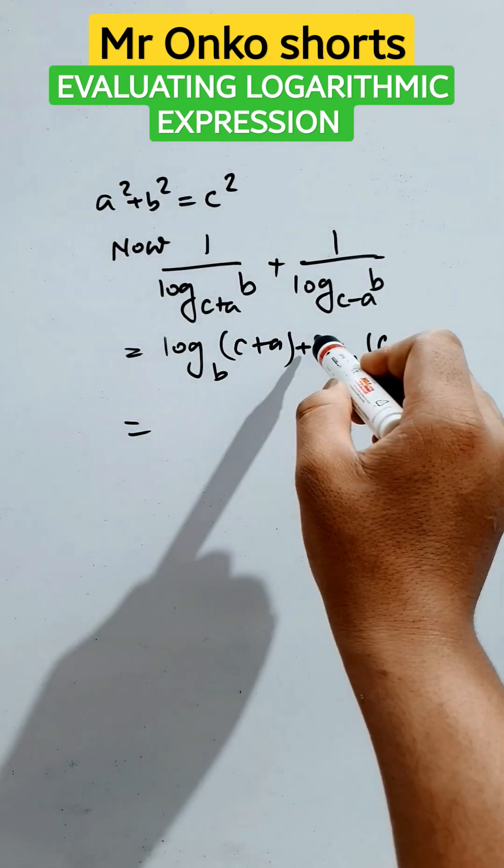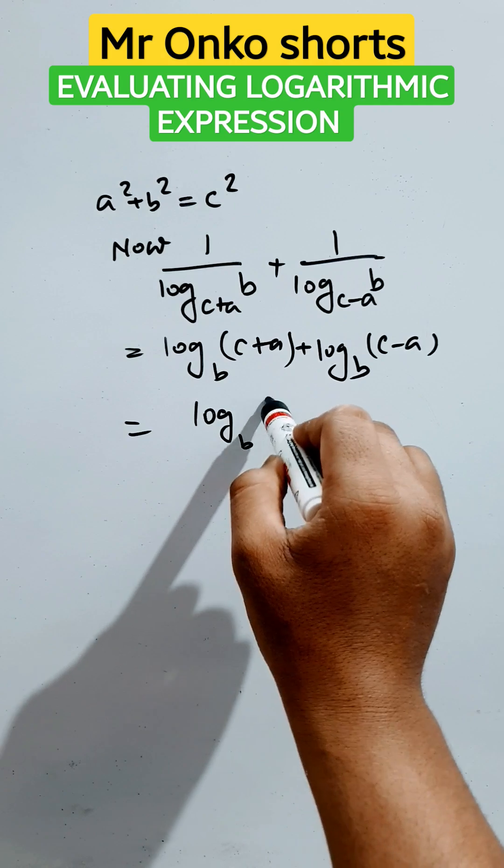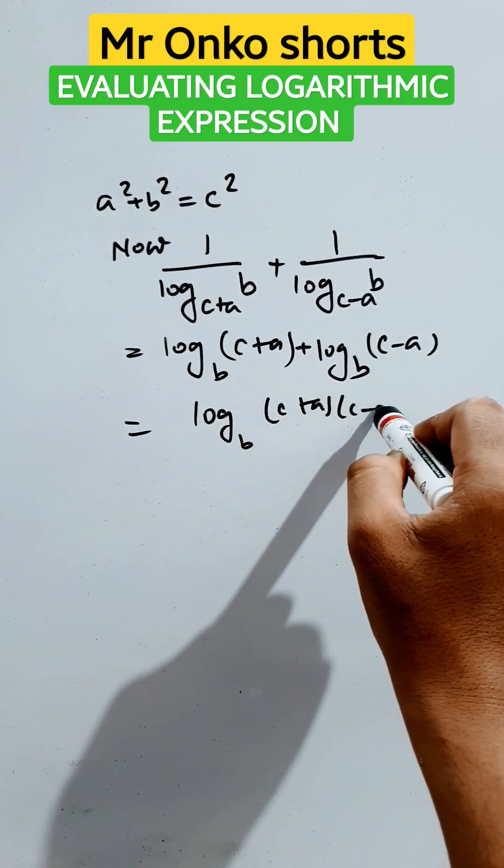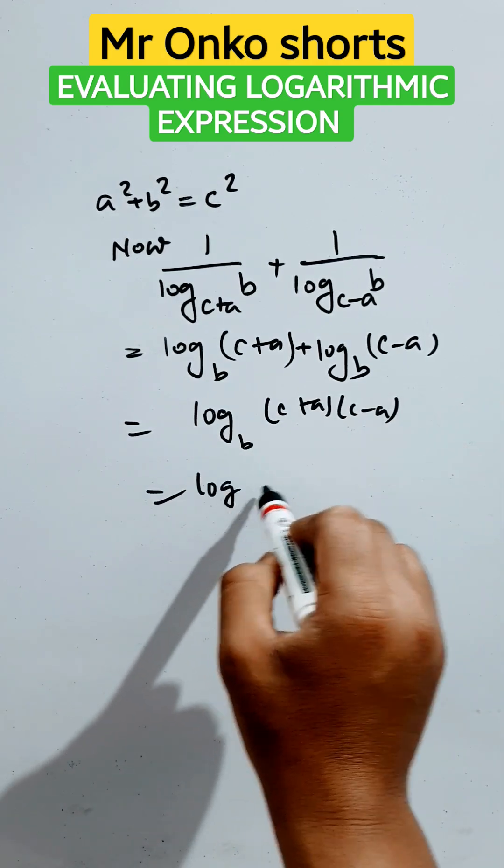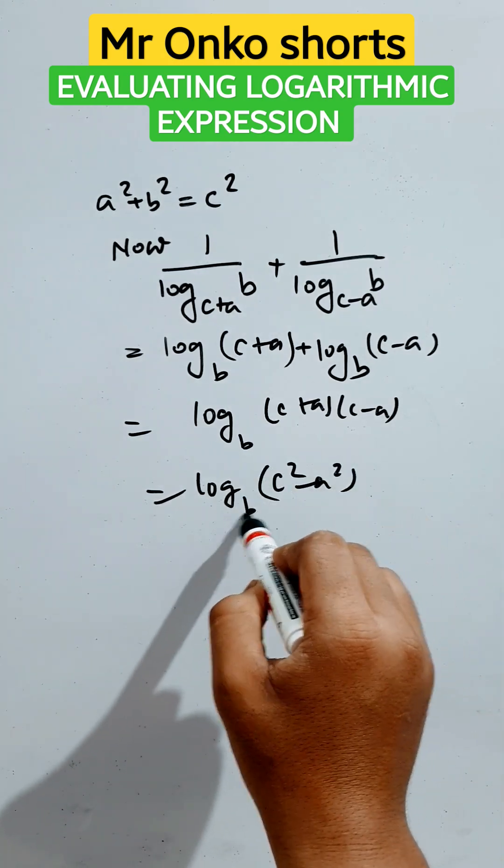Now here both the bases are same and it's an addition case. So the arguments will be multiplied with each other. Then it will be logarithm of c square minus a square to the base b.